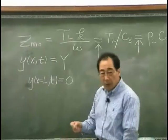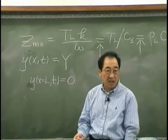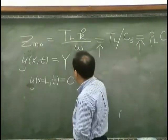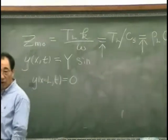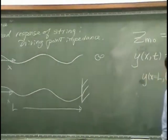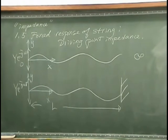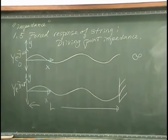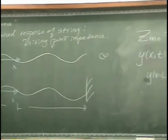And because we are harmonically exciting the string, we know that the wave that is generated in this region would have sine or cosine form.